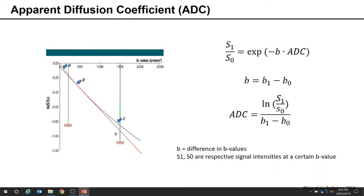For water molecules that move freely in space, the MR signal attenuation due to free diffusion follows a single exponential, as described by the equation. This can be plotted on a log scale as a straight line — the red line for free water. In DWI, these principles governing free diffusion are used to study tissues; however, diffusion in tissues is more restricted, so this equation doesn't give the true diffusion coefficient but is an approximation — referred to clinically as the apparent diffusion coefficient.